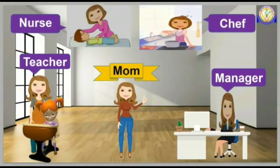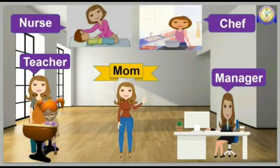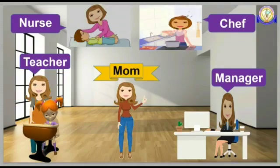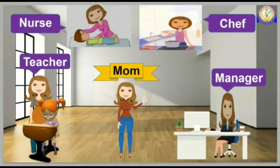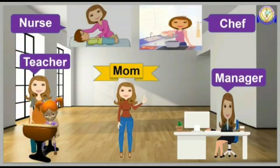Same mom playing so many roles in different places. Face value is mom, who remains unchanged. But place value is the task or role which she does according to the requirement, which keeps changing. The same thing happens with the digits of numbers. To know the concept more in detail, let's take the help of numbers.